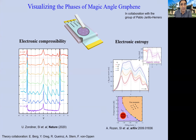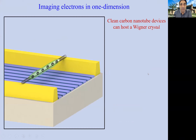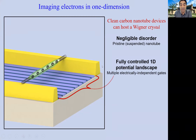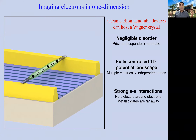Now let me move to our main topic: imaging a Wigner crystal in a nanotube. Nanotubes are a good place to look. By assembling them very cleanly we get devices with practically negligible disorder along the nanotube. The devices have multiple gates that allow us to confine and manipulate electrons as we wish. Critically, in this geometry the interaction between electrons is the strongest imaginable in any condensed matter system because the electrons are effectively suspended in vacuum with no dielectric screening and gates kept far away.